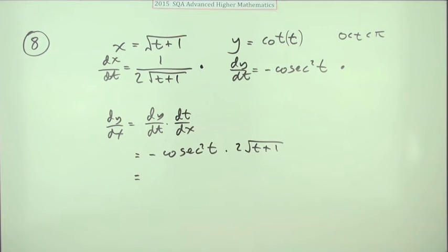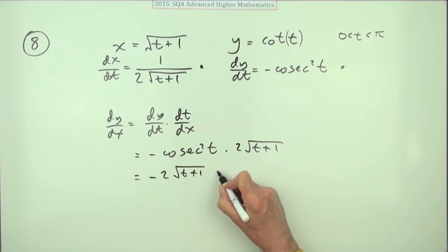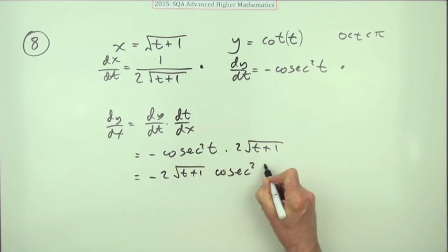It's just a case of how would you like to tidy that up. I think I'll put this bit in front and make it -2√(t+1)cosec²t, and that's the third mark.